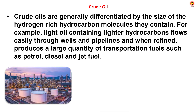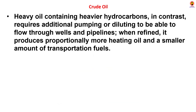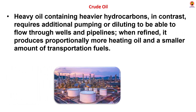Crude oils are generally differentiated by the size of the hydrogen-rich hydrocarbon molecules they contain. For example, light oil containing light hydrocarbons flows easily through wells and pipelines, and when refined produces a large quantity of transportation fuels such as petrol, diesel and jet fuel. Heavy oil containing heavy hydrocarbons, in contrast, requires additional pumping to be able to flow through wells and pipelines. When refined, it produces proportionally more heating oil and a smaller amount of transportation fuel.